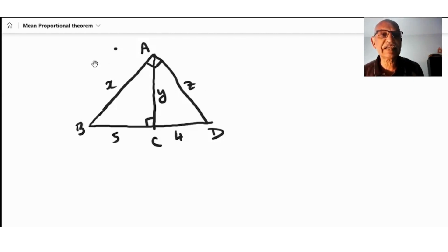The mean proportional theorem applies when we have a 90-degree triangle with a line going down at 90 degrees. So this is 90 and this is 90 degrees.